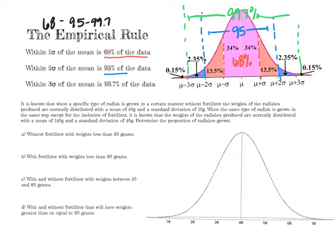Here we have a radish grown in a certain type of fertilizer. Those radishes are normally distributed — which means we draw a normal curve. The mean, mu, is equal to 40 and the standard deviation, sigma, is equal to 10. The curve is already labeled with mean 40 and standard deviation 10.